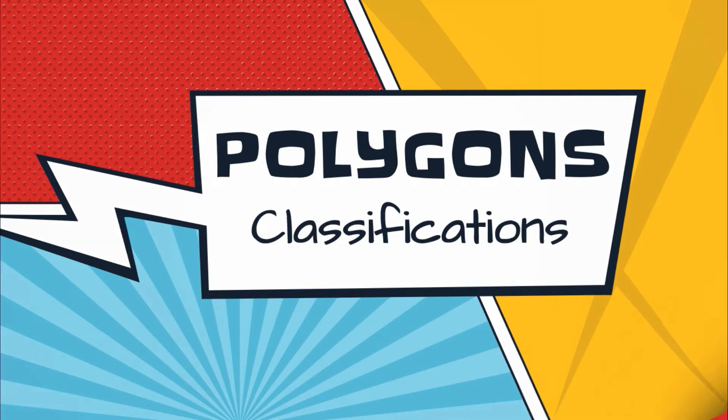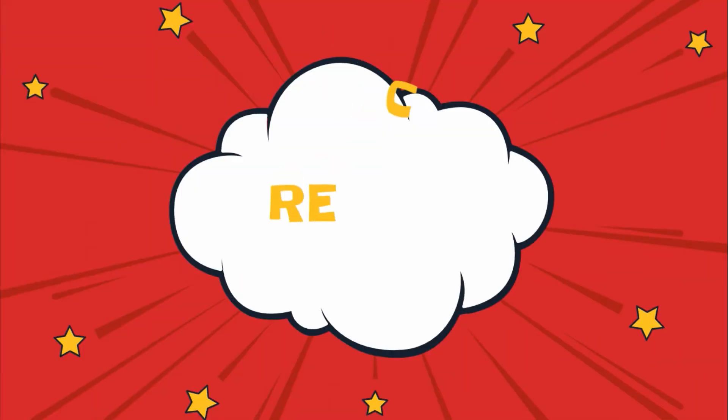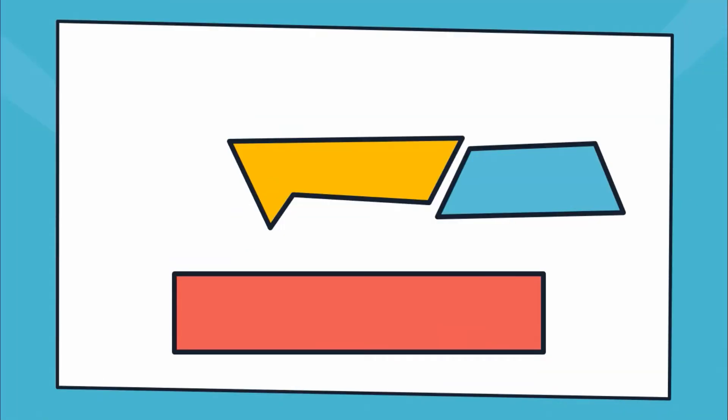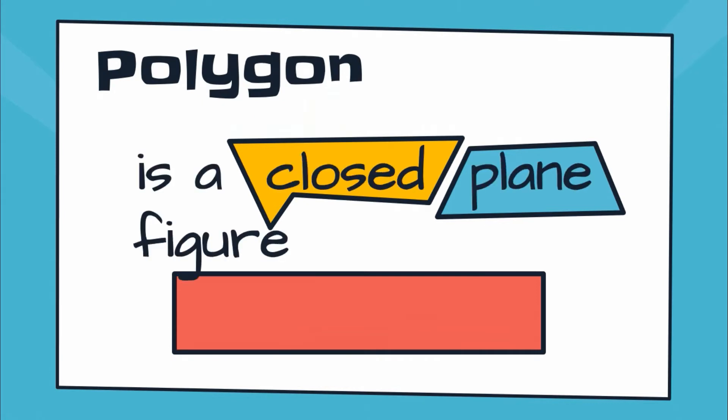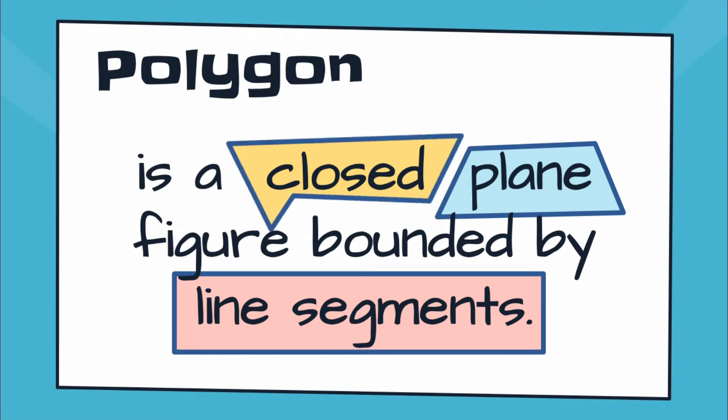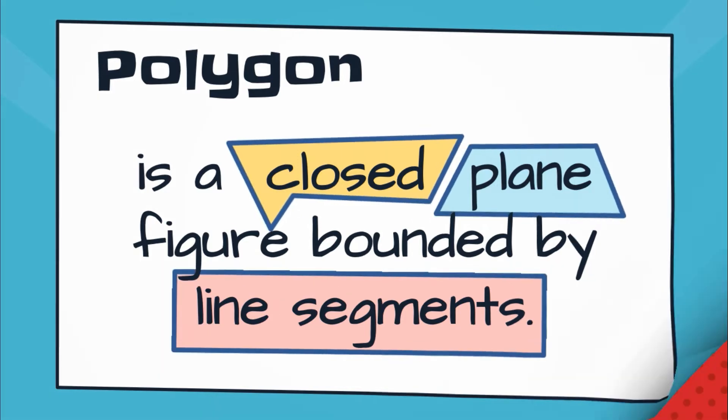Just a sort of recall, let us define again what a polygon is. A polygon, based from the definition, is a closed plane figure bounded by line segments, which are the sides of the polygon. Remember, your polygon must be closed, it must be plane, and each side must be line segments.